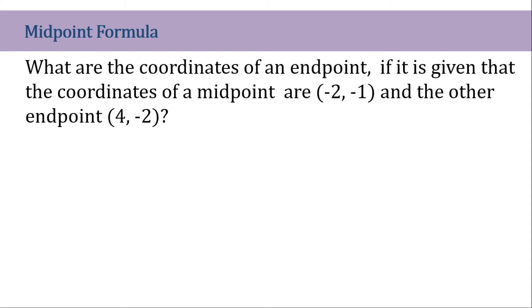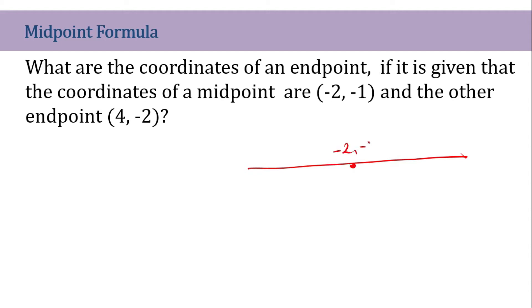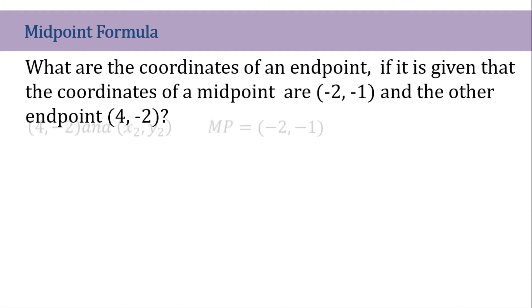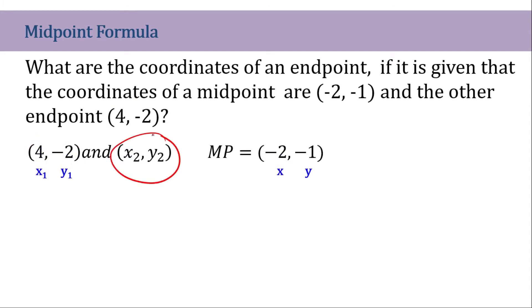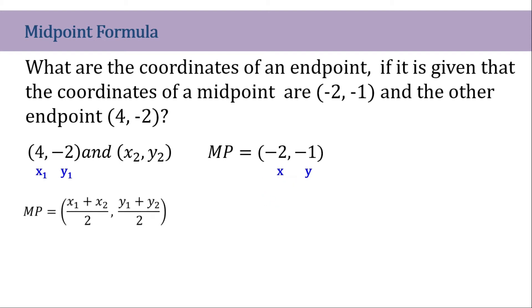For our next example, what are the coordinates of an endpoint if it is given that the coordinates of the midpoint are (negative 2, negative 1), and the other endpoint is (4, negative 2)? So there is a line segment. The midpoint of this is (negative 2, negative 1) and one endpoint is (4, negative 2). We are asked to find the other endpoint. So we will assign 4 comma negative 2 as our x sub 1 and y sub 1, and our point 2 is unknown — we will use the variable x sub 2 and y sub 2. For our midpoint, we have negative 2 and negative 1.